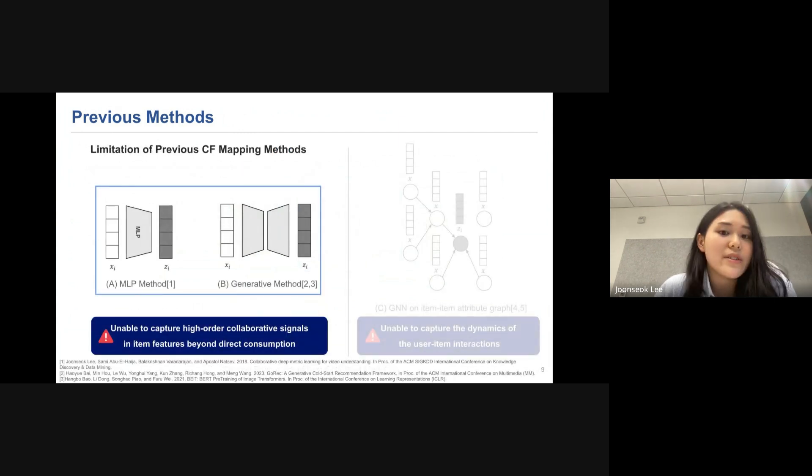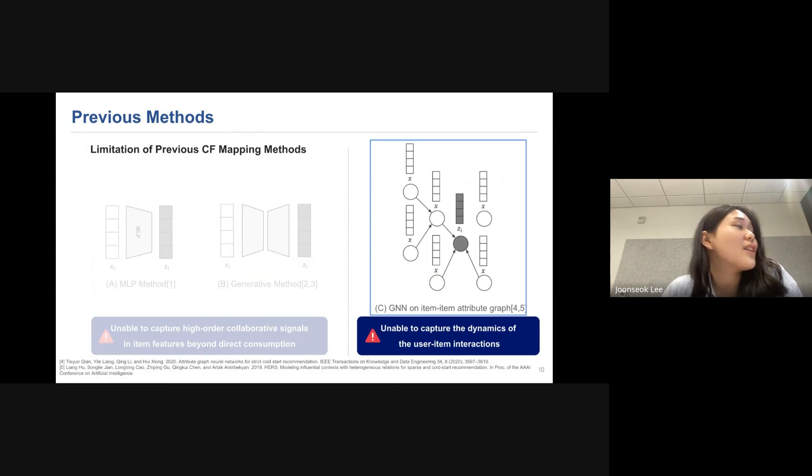So I'll talk about the various CF mapping methods and their limitations. Previous CF mapping methods include MLP method or generative methods such as VAE or autoencoder. However, these methods are unable to capture high order collaborative signals and item features beyond direct consumptions. What I mean by this is these methods do not use neighborhood information and only rely on direct consumption. Therefore, recently there have been attempts to use graph neural networks on item-item attribute graphs to utilize the high order collaborative signals.